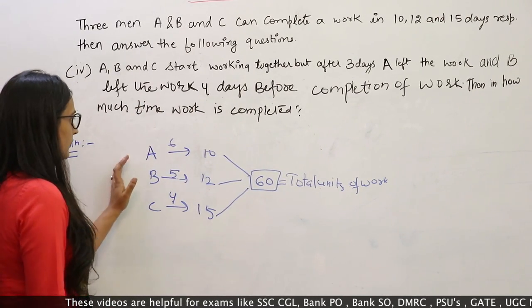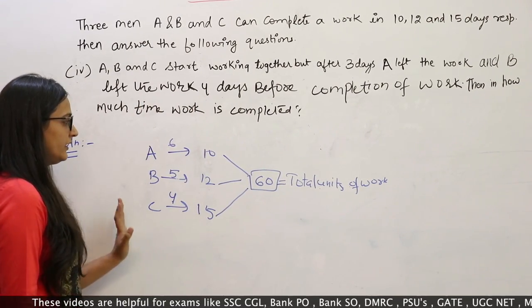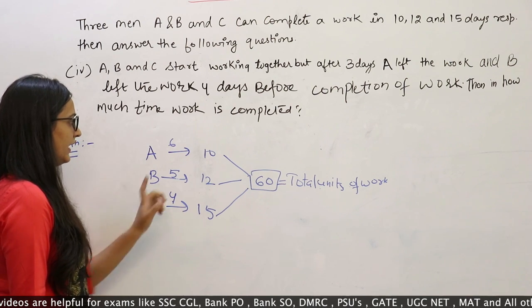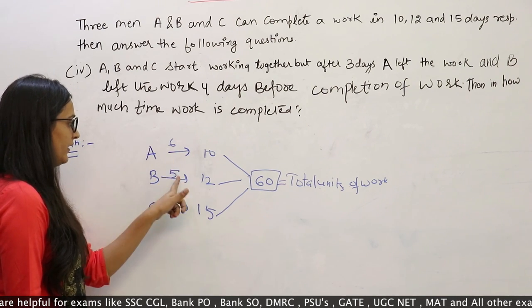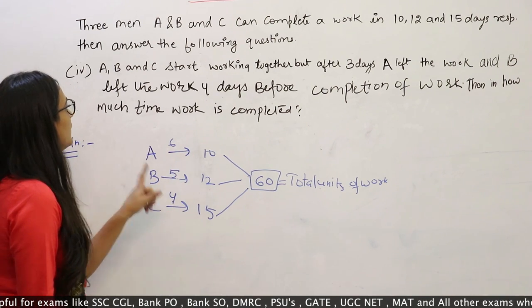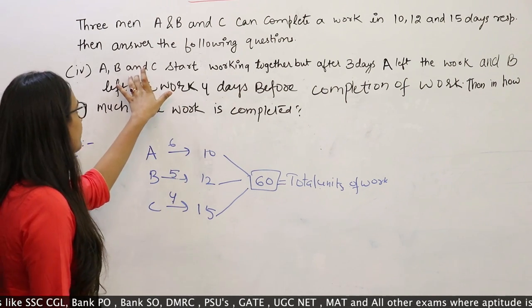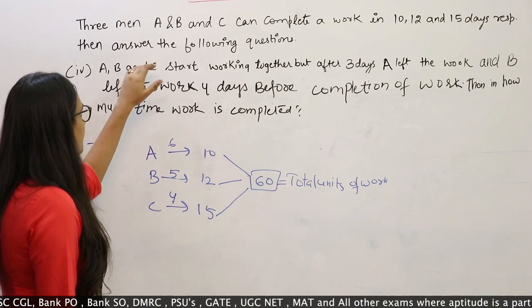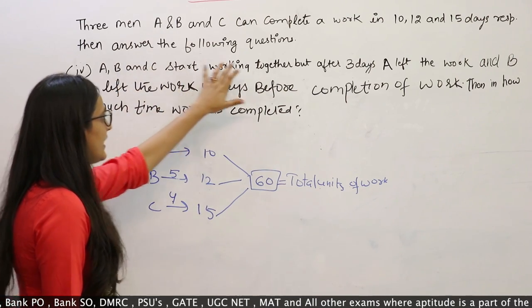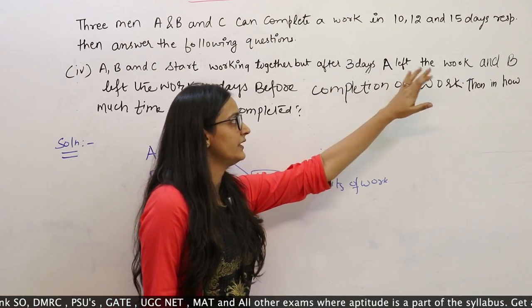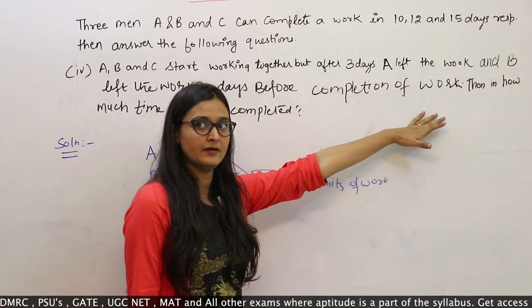First of all, we will find the efficiency of A, B and C, that is 6, 5, 4. Now what the question says is A, B and C start working together, but after 3 days A left the work.